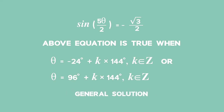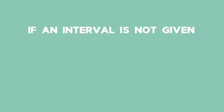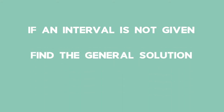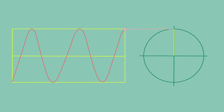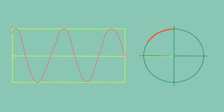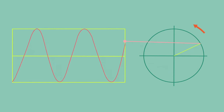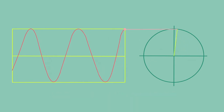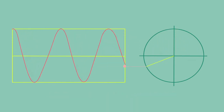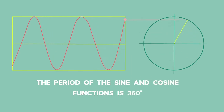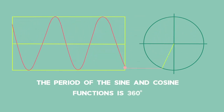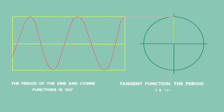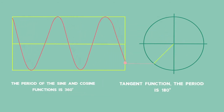We will build on these concepts by incorporating our knowledge of compound and double angles. Remember that if an interval is not given, you have to find the general solution to the trig equation. The sine function is created by a unit circle — because the angle rotates around the circle, the sine function repeats once every full rotation. The period of the sine and cosine functions is 360 degrees, while for the tangent function, the period is 180 degrees.